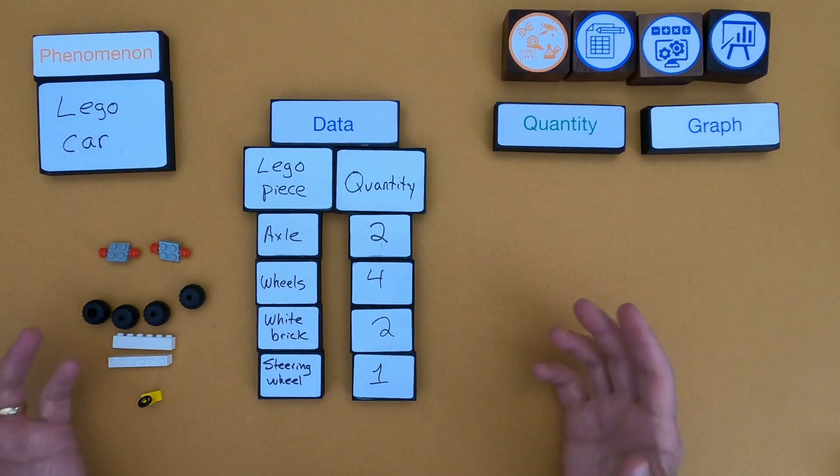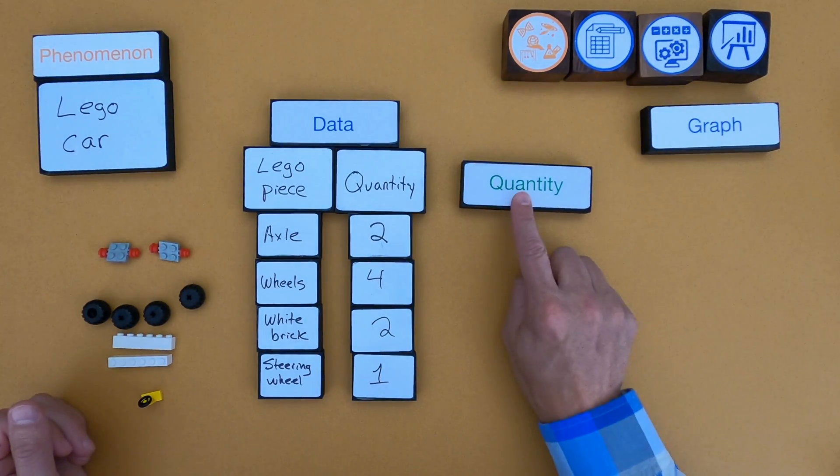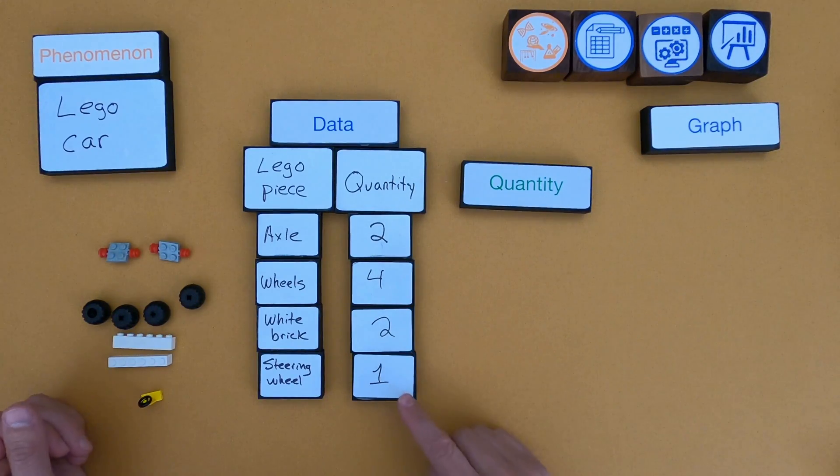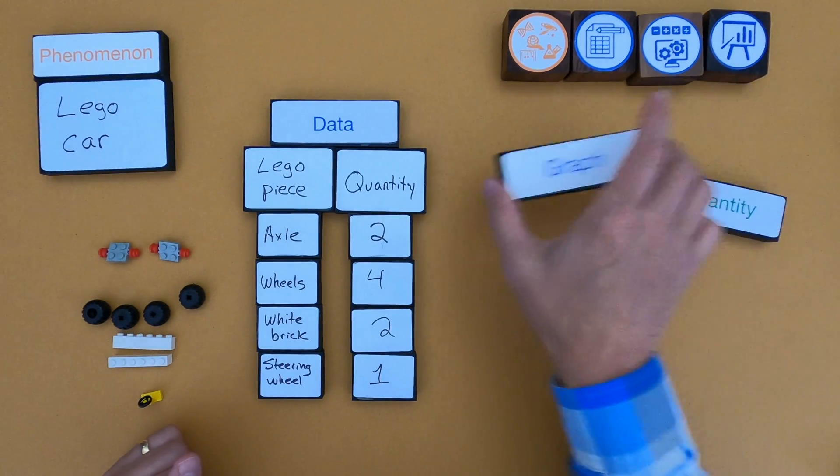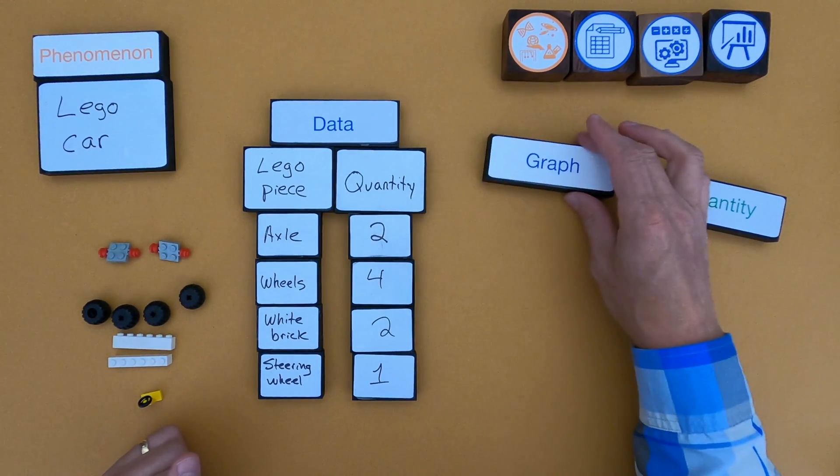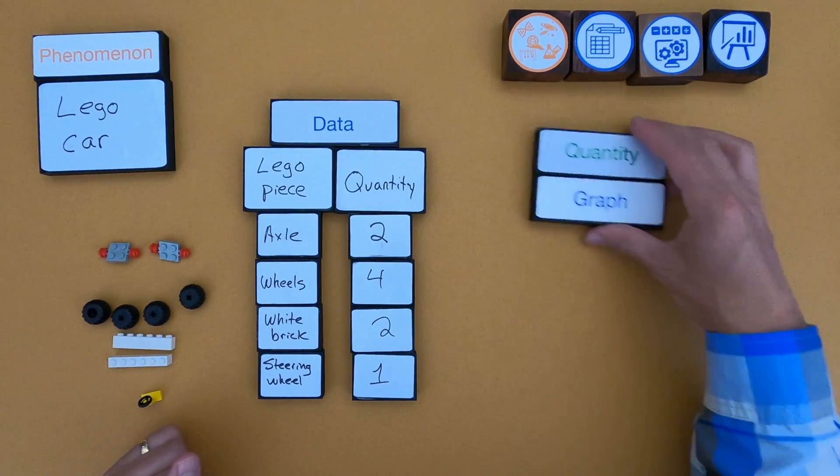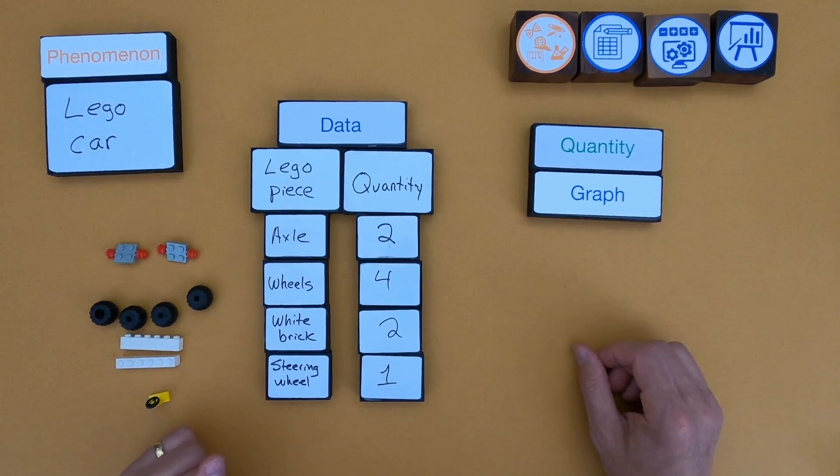Okay, so now I've created a data table. It's got quantitative data, which is going to be the numbers of each. And then it also has qualitative data. What is the actual piece? And so the next thing I can do now that I have quantitative data is I can create a graph that shows those quantities. So let me do that.